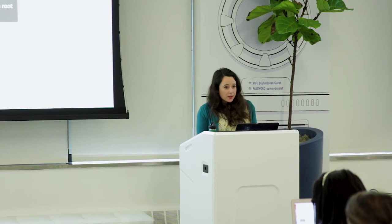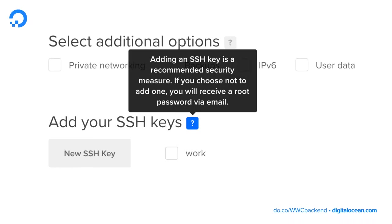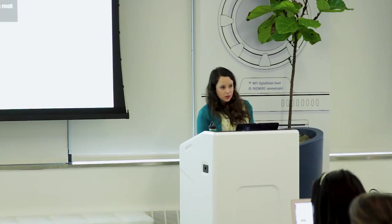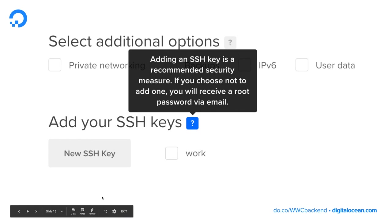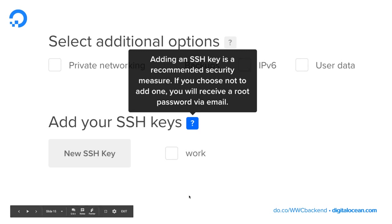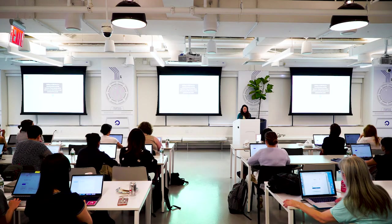Finally, we're going to talk about SSH keys. SSH keys are a recommended security measure, and for CoreOS they're required. With other droplets like Ubuntu, you may be able to use a user and password emailed to you instead. This is my personal interface — you can see I already have an SSH key called 'work' here as an option, or I could add a new SSH key. I'll walk you through doing that right now.